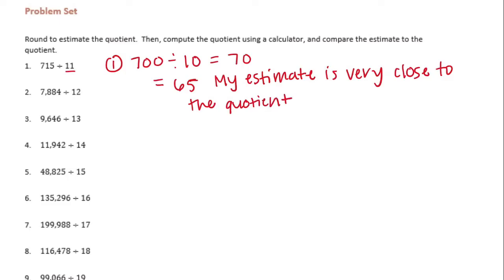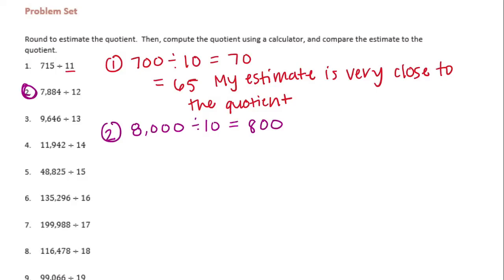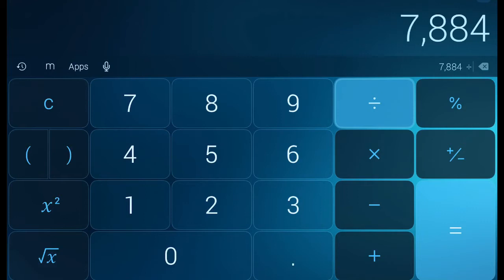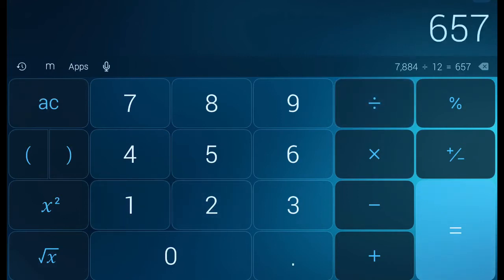Number 2: 7,884 divided by 12. I'll circle them in a different color so we know which one's which. I'm gonna round 7,884 to 8,000, and round 12 to 10. So 8,000 divided by 10 is equal to 800. Now let's do the actual division problem on a calculator — 7,884 divided by 12 is equal to 657.